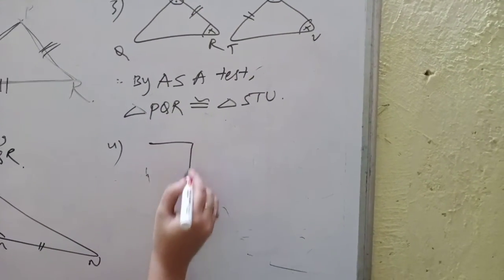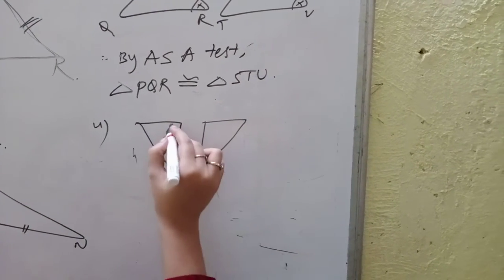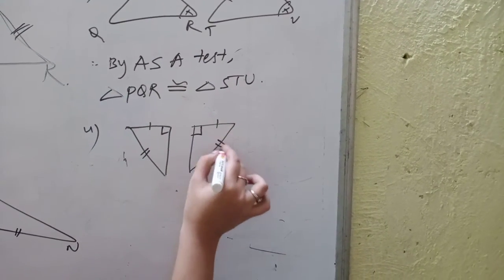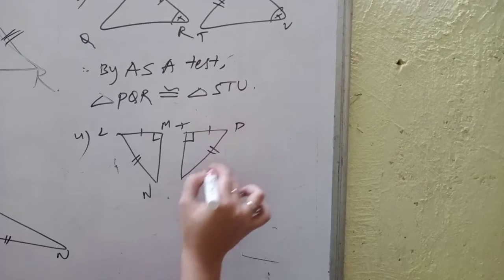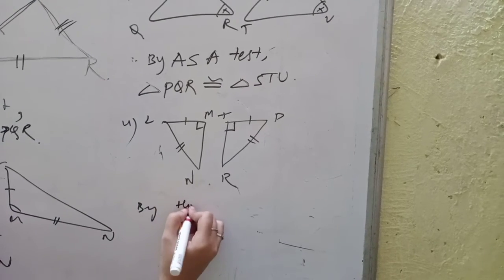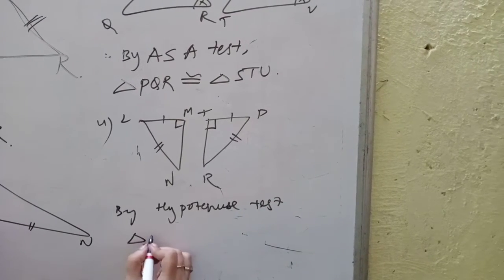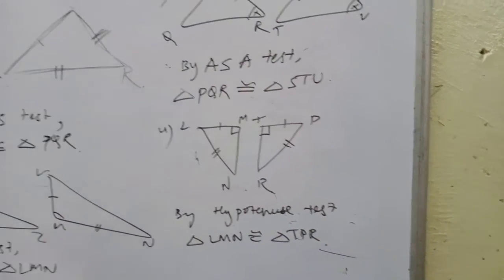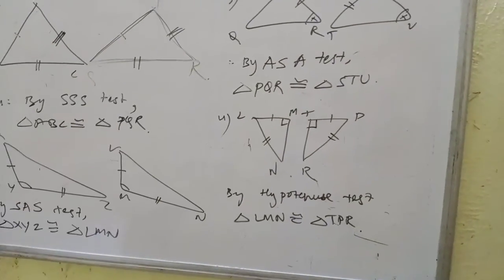Now last, fourth one. This test will be 90 degree hypotenuse test. Triangle LMN is congruent to triangle TPR. Let's start with question number 2.